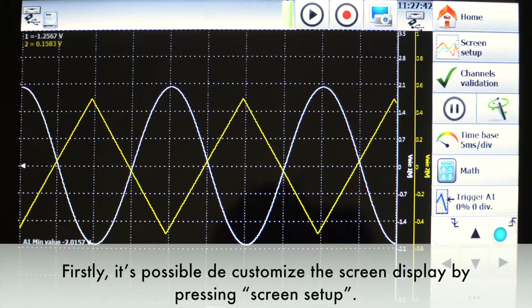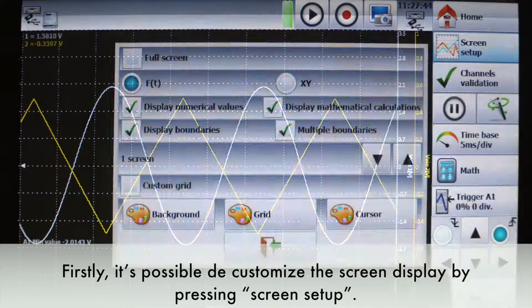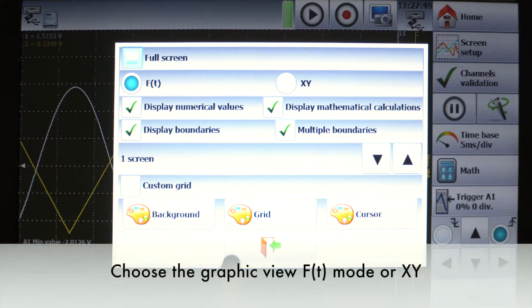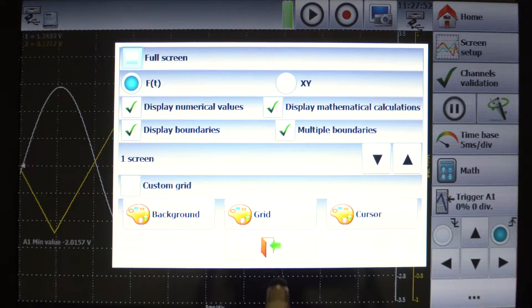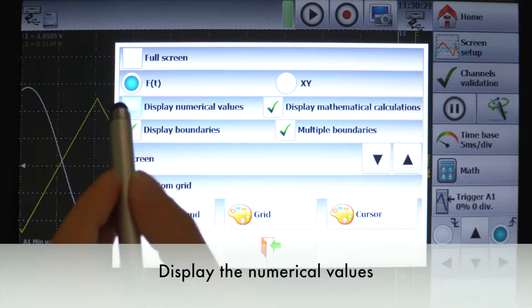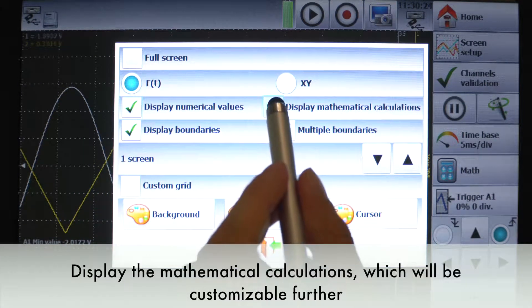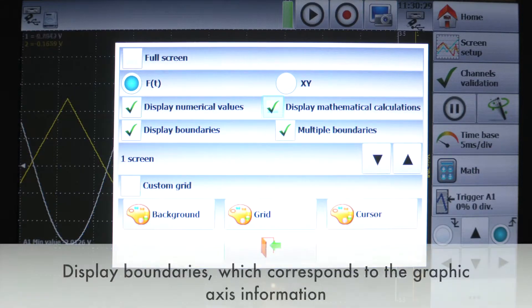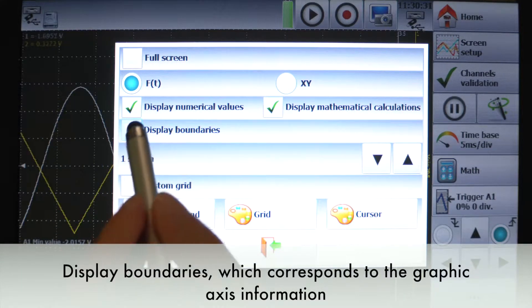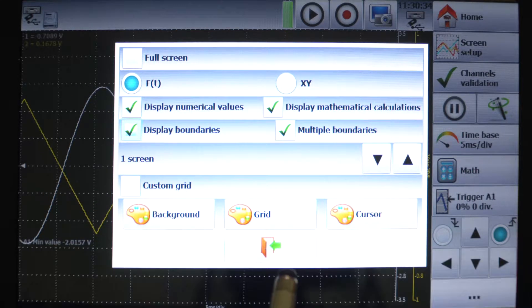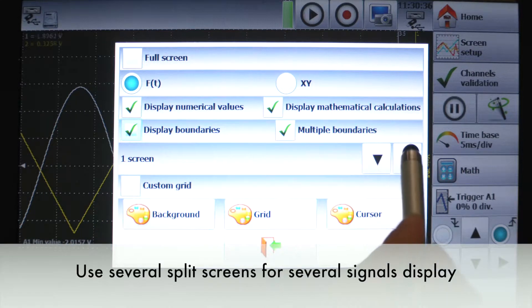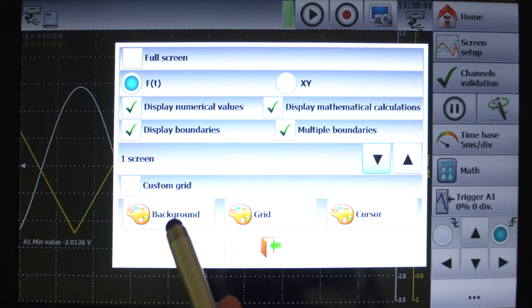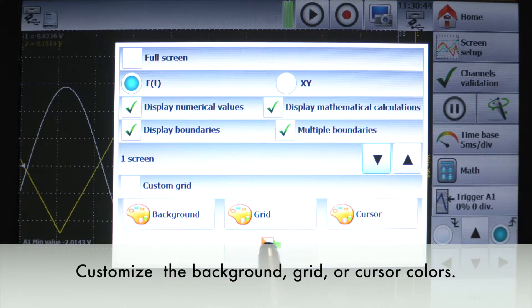Firstly, it's possible to customize the screen display by pressing screen setup. You could display in full screen, choose the graphic view FT mode or XY, display the numerical values, display the mathematical calculation which will be customizable further, display boundaries which correspond to the graphic access information, use several split screens for several signal display, and customize the background, grid, or cursor's color.